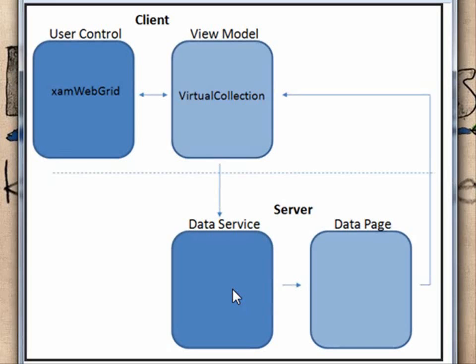We'll seed the collection with our best educated guess initially, then return the actual count back to the client. We'll also cache that value so the count query only runs when needed — basically just the first time. Once you understand this flow, let's jump into Visual Studio.